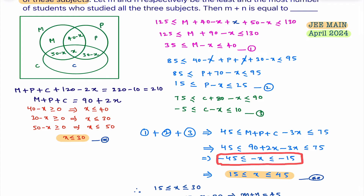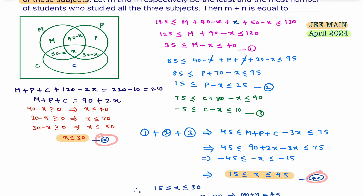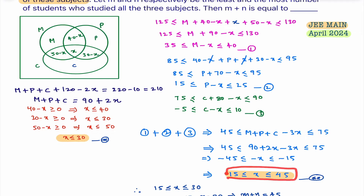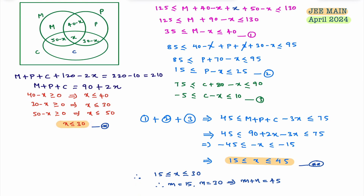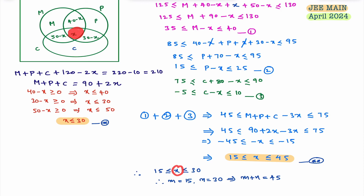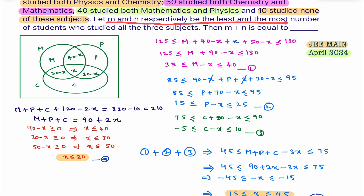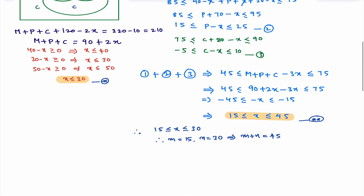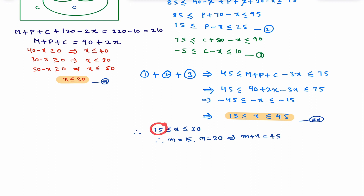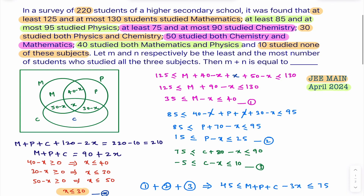Substituting M + P + C = 90 + 2x into the combined inequality, I get a simplified inequality — this is the second main result (marked double star). From this, x lies between 15 and 45. But from the first constraint, x ≤ 30, so the final conclusion is x ∈ [15, 30]. Since x represents the number of students studying all three subjects, m (the least) = 15 and n (the most) = 30. Therefore, m + n = 45. The answer to this integer-type question is 45.